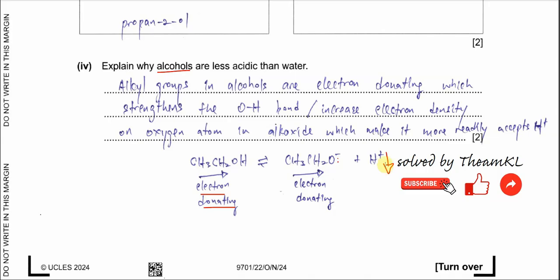In summary: the alkyl group in alcohol is electron-donating, which strengthens the O-H bond — or equivalently, increases electron density on the oxygen — making the oxygen more likely to accept H⁺ back, resulting in lower acidity.